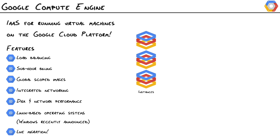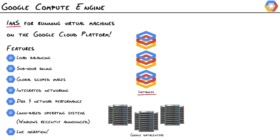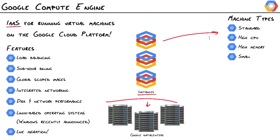Google Compute Engine is their infrastructure as a service offering. It's one of the products in the Google Cloud Platform that allows us to spin up virtual machines, known as instances, in the cloud — hosted, managed, and running inside of Google's data centers. When we create an instance, we're going to specify a machine type, which determines the physical specification of that virtual machine. There are a lot of tiers to choose from, and within these there are more tiers that will really allow you to customize your machine for the kind of workload that you're expecting.